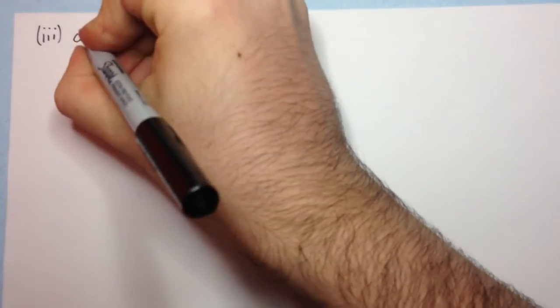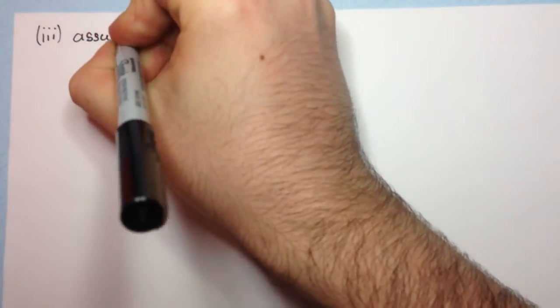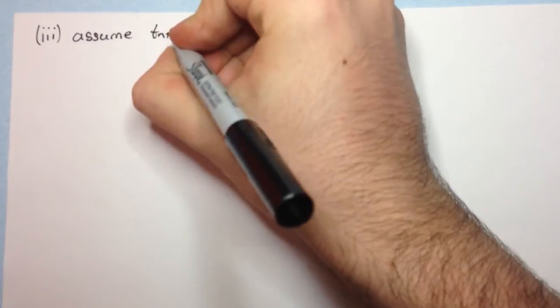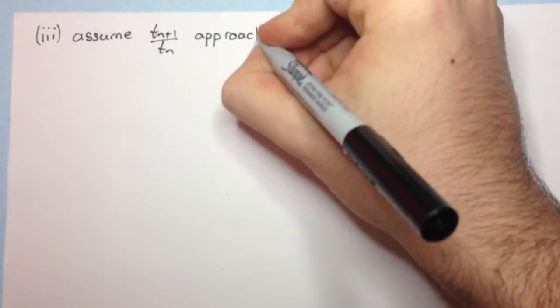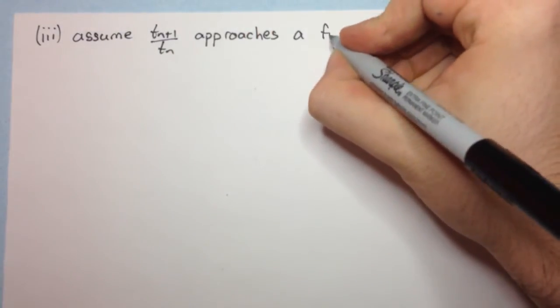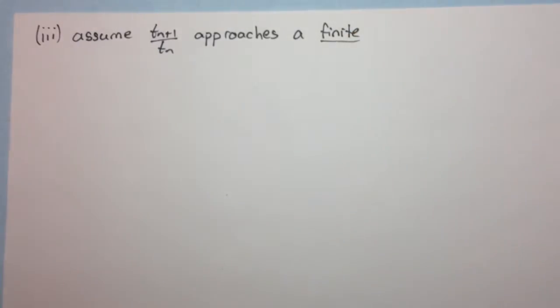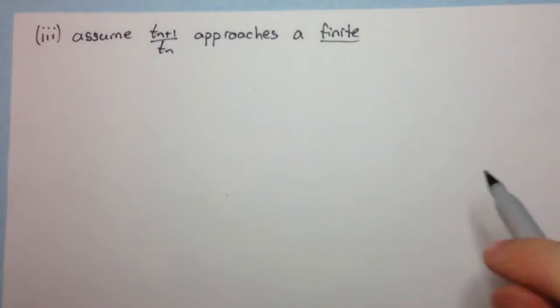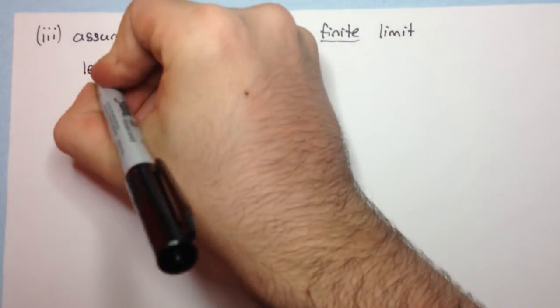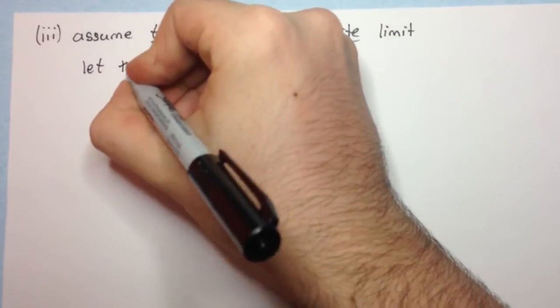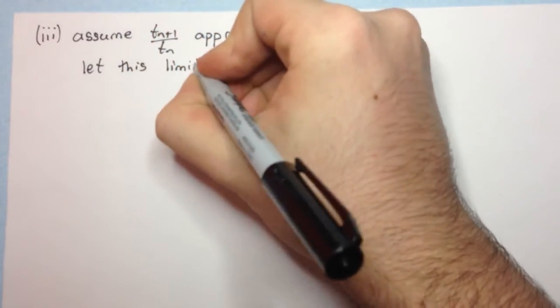The first step is to assume that it approaches a finite limit. We need to assume that it's finite, because otherwise if we had infinities, it'd be a bit more difficult to work with. So assume it approaches a finite limit, and let's call this limit phi.